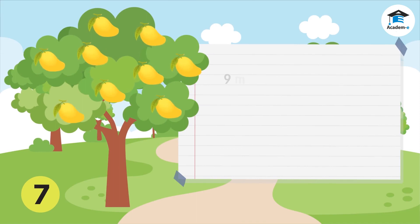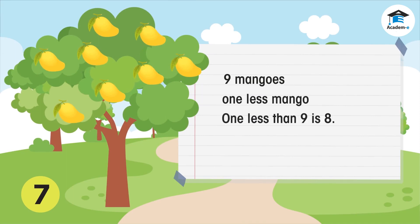There are nine mangoes in the tree. Elsit gets one mango from the tree, so the tree now has one less mango. One less than nine is eight. The tree now has eight mangoes left.